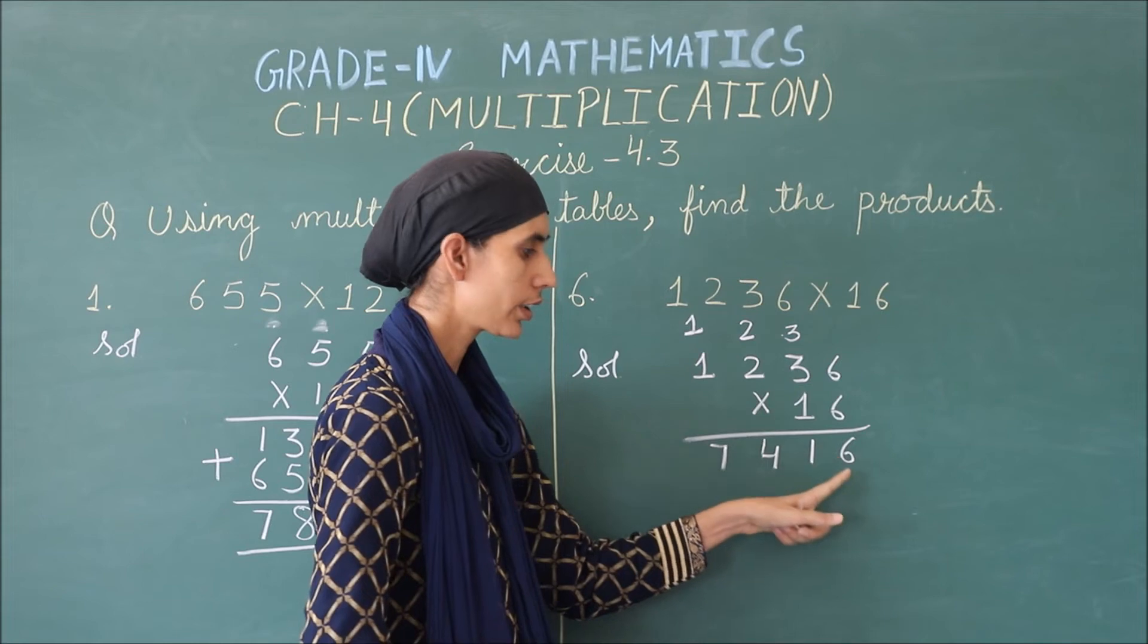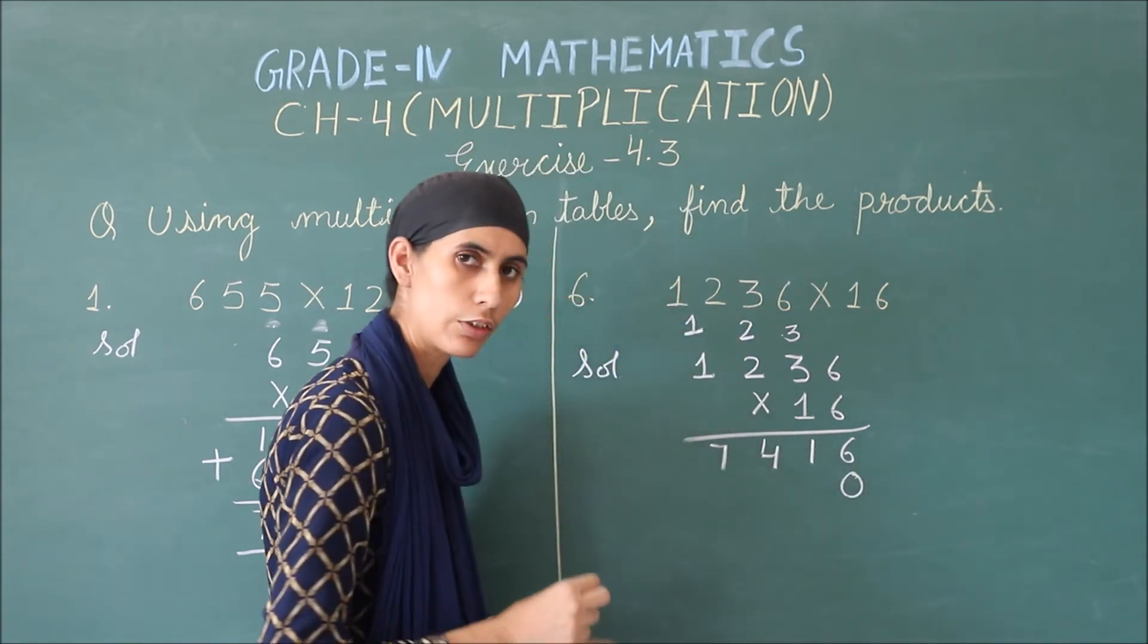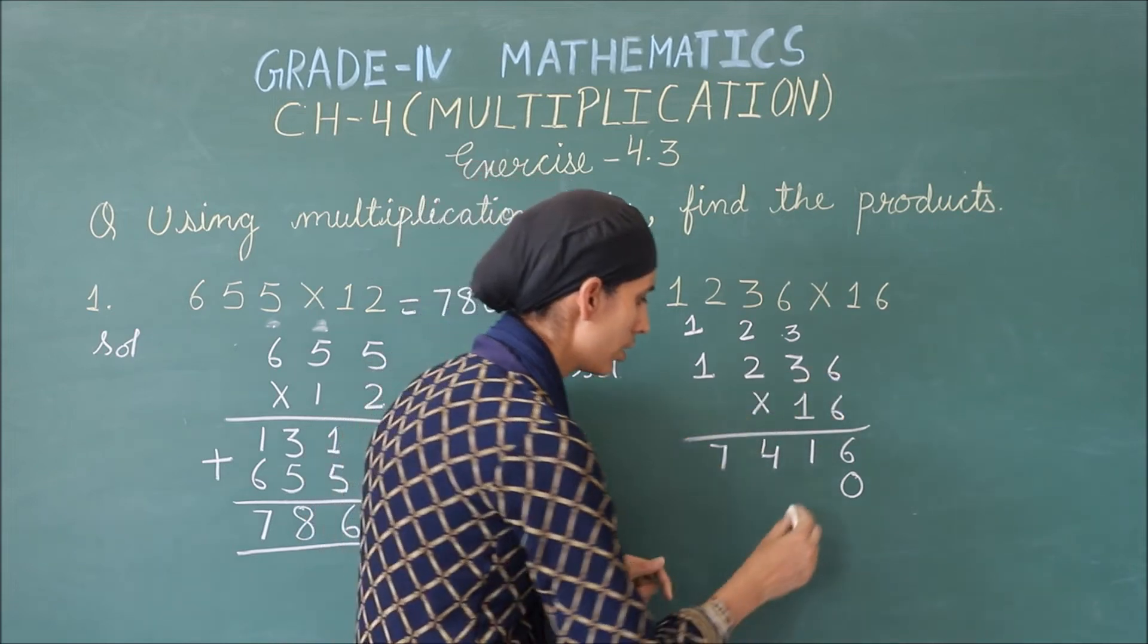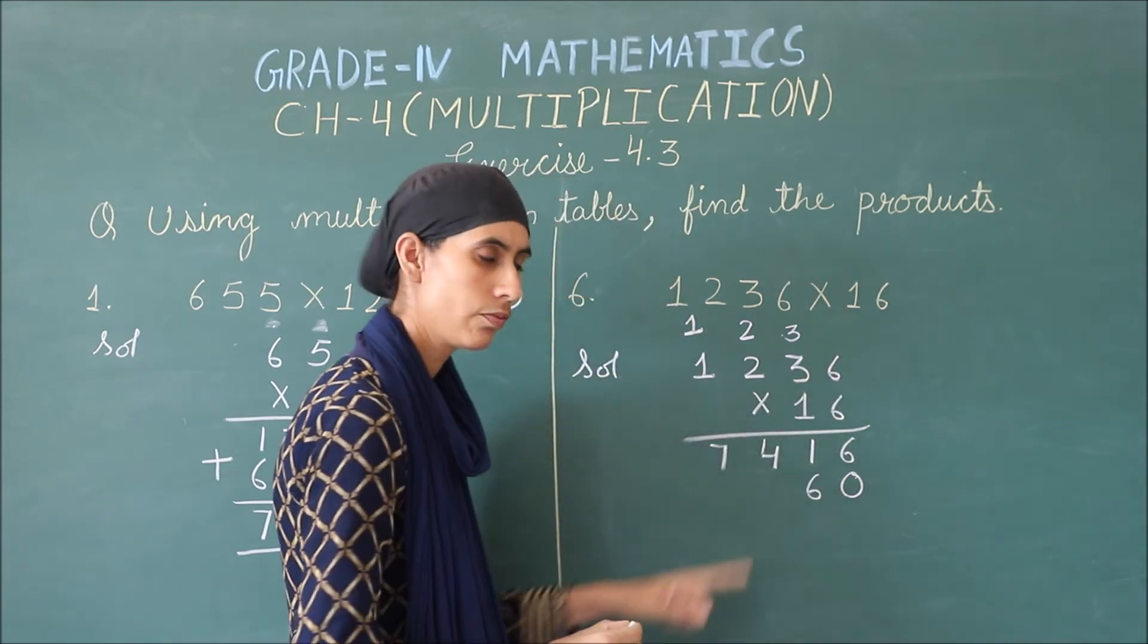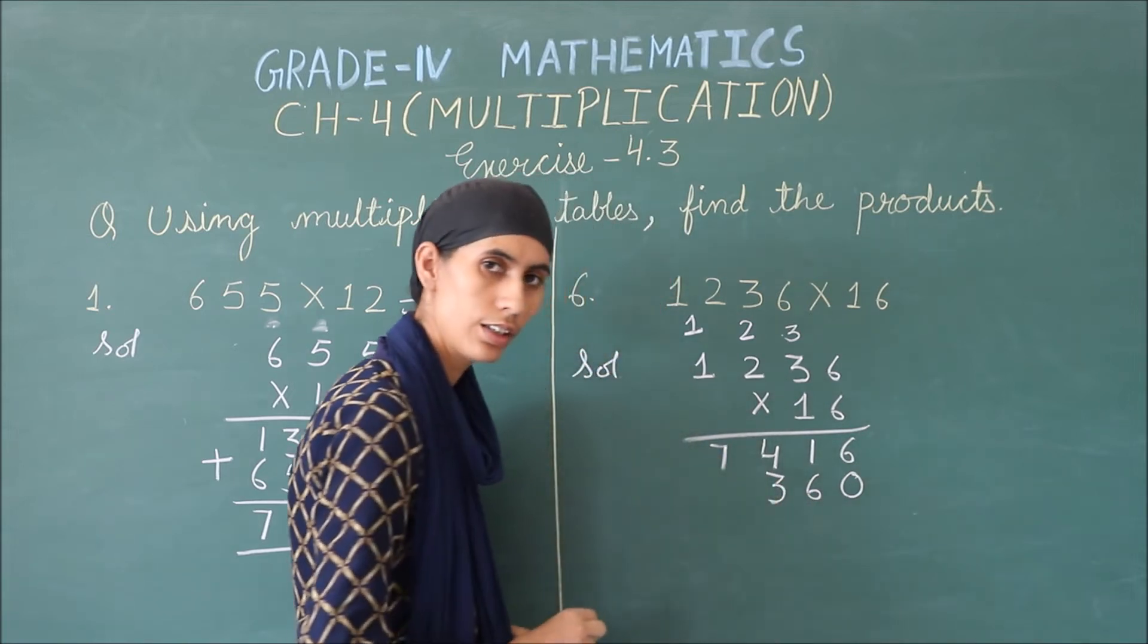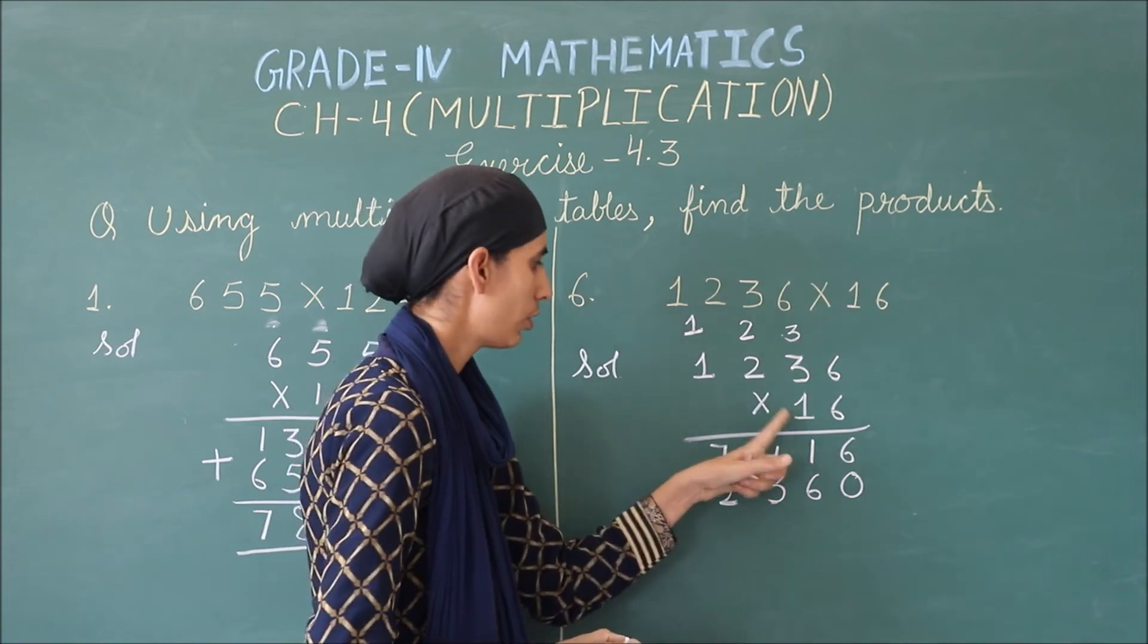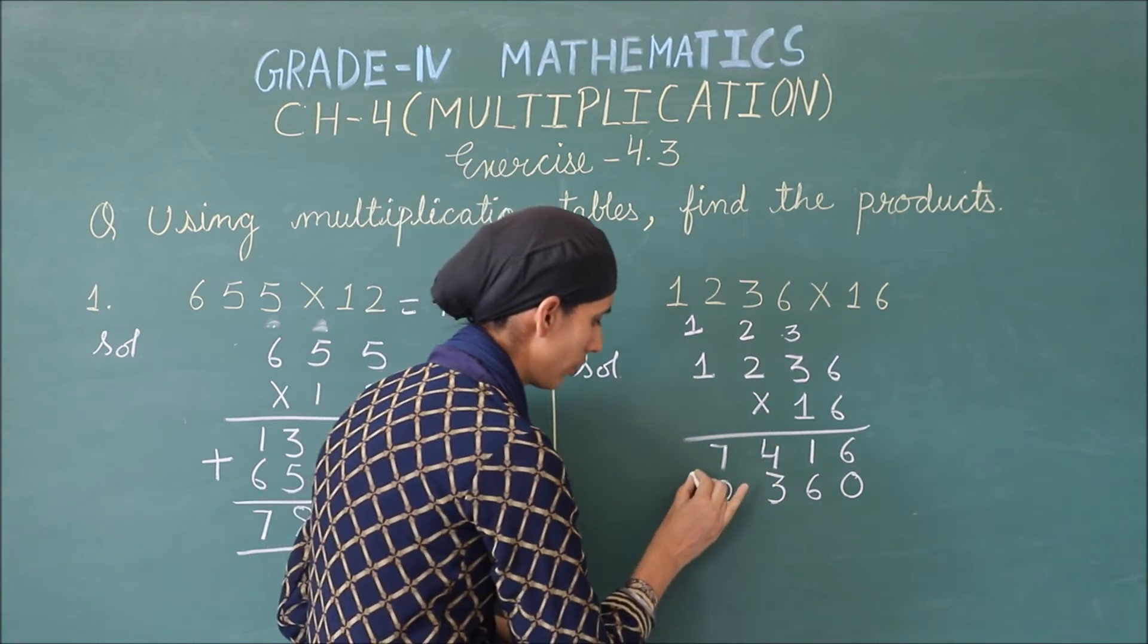Next, multiply with 1. So, first on 1s place, 0. Then, start from the 1s place. 1 times 6 is 6. 1 times 3 is 3. 1 times 2 is 2. 1 times 1 is 1.